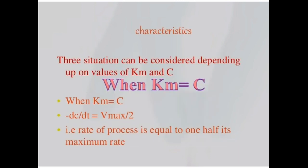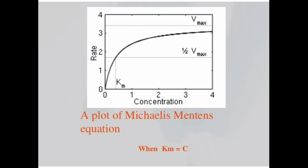There may be three situations according to formula. When Km can be equal to C, it can be greater than C, it can be less than C. When Km is equal to C, then minus dC by dT will become Vmax by 2, that is rate of process is equal to one half of its maximum rate and the plot can be seen as shown in the figure.